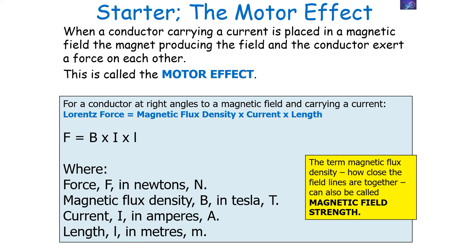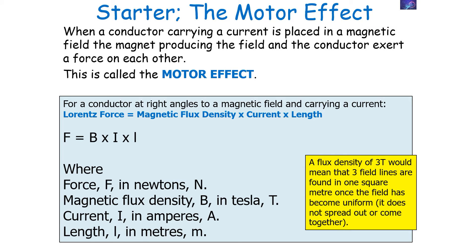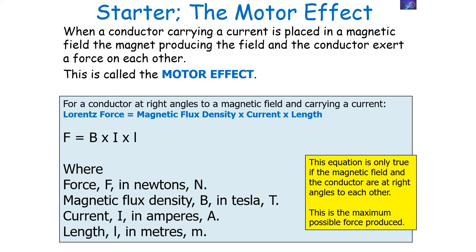The term magnetic flux density — which is how close the field lines are together — can also be called the magnetic field strength. It is measured in tesla, named after the famous physicist Nikola Tesla, and refers to how many magnetic field lines are found in one square metre. For example, a flux density of three teslas means there are three field lines found in one square metre once the field is uniform. The equation F = BIL is only true if the magnetic field and the conductor are at right angles to each other, giving the maximum possible magnetic force.